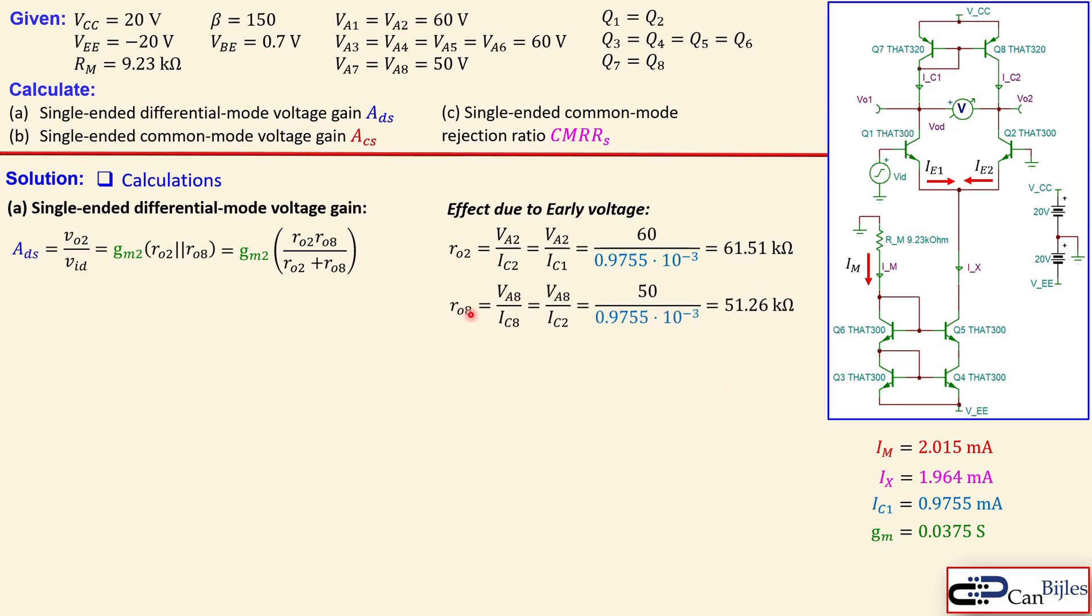Now the similar form for the RO8. Now remember RO8 is for the Q8. And that is a PNP transistor. And that is shown here. Which is 50. So lower than 60. And again we know that IC8. Which is this current. Is exact same as IC2. Which is also IC1. So we just use that value also from IC1 here. You get now 51.26 kilo ohms. Now you can calculate that. Because we know everything from this expression. And also the values here for the RO. RO2 and RO8.